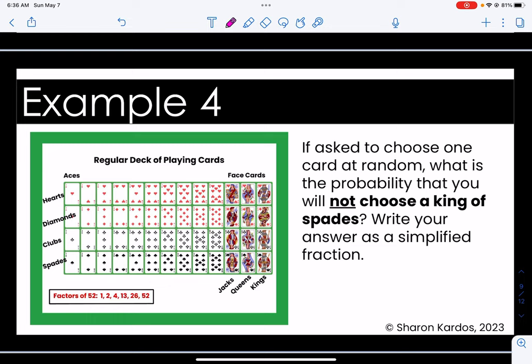Example four and remember if I'm going too fast you can always rewind the video and go over the problem again. If asked to choose one card at random what is the probability that you will not choose a king of spades? Write your answer as a simplified fraction.